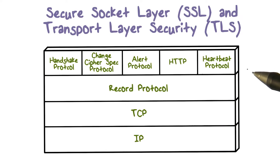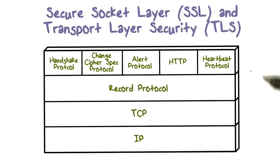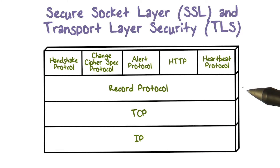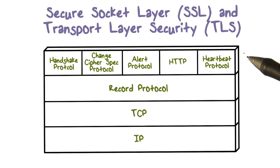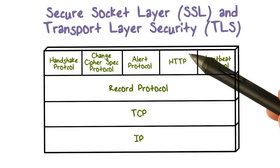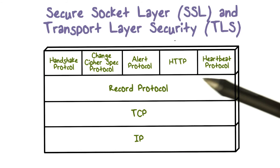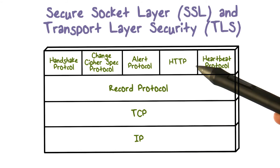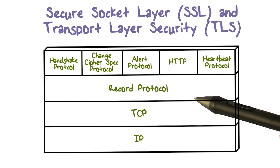TLS is not a single protocol, but rather two layers of protocols as illustrated in this figure. The Record protocol provides basic security services to various higher layer protocols. For example, HTTP can operate on top of TLS.